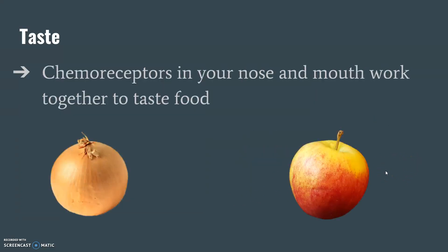Chemoreceptors are also important for our sense of taste. Both taste and smell rely on chemoreceptors, and they actually work together to help us taste food. In fact, they are so closely related that if we did not have a sense of smell, it would be nearly impossible to tell the difference between the taste of an onion and the taste of an apple.